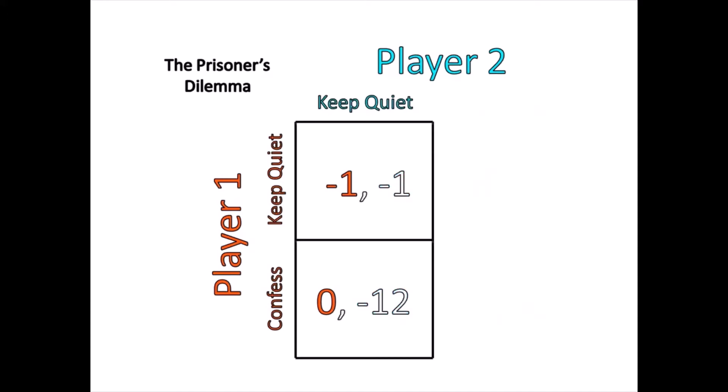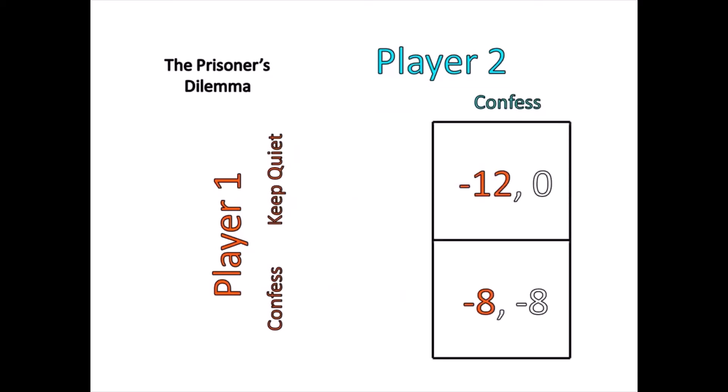For example, with player 1: if player 2 were to keep quiet, then player 1 should confess because 0 is greater than negative 1. And if player 2 were to confess, then player 1 would still want to confess because negative 8 is better than negative 12.